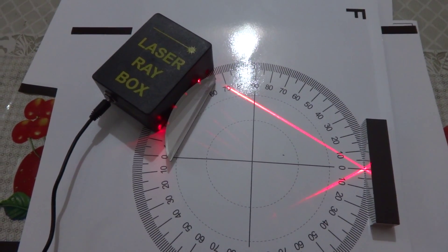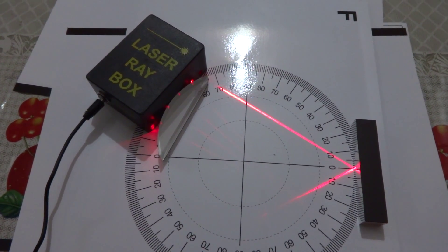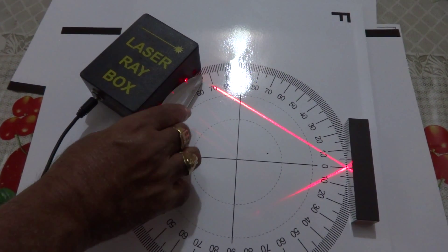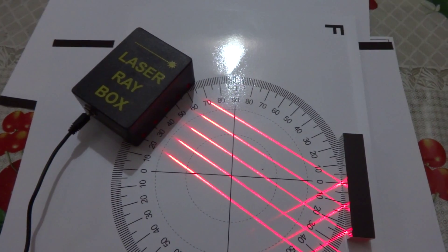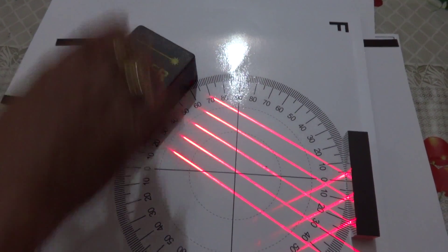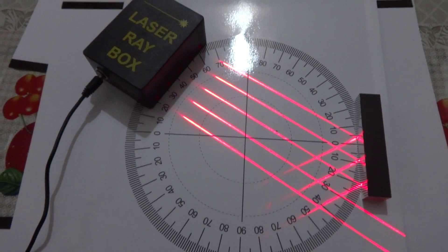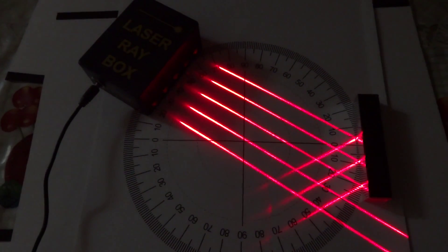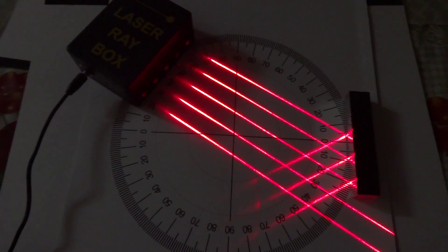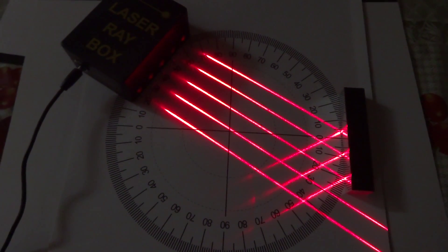Now, let us see in place of plane mirror. Let us suppose multiple rays. If I keep many rays, you can observe that all the rays are being reflected. Let us see it in the dark. You can see that all rays are getting reflected.